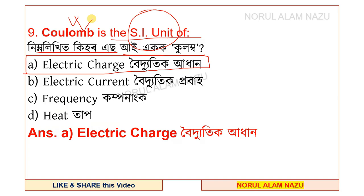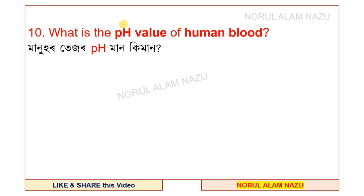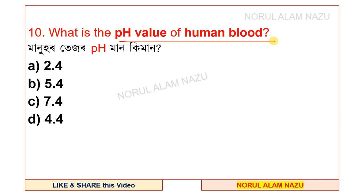Question number 10: what is the pH value of human blood? Option c — 7.4 — is the answer. The approximate pH of human blood is 7.3 to 7.5, with the average being 7.4.